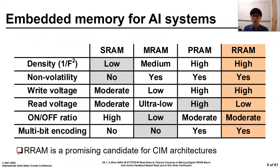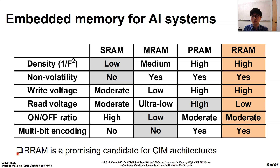Many prior works tried to implement CIM architectures with various types of memory. The next-generation memory has an advantage in density and nonvolatility compared to SRAM. Even though RRAM has a high write voltage, a low read voltage helps RRAM support compatibility with the CMOS process. In addition, an adequate on-off ratio of RRAM enables multi-bit encoding compared to MRAM. Thus, RRAM is a promising candidate for CIM architectures.